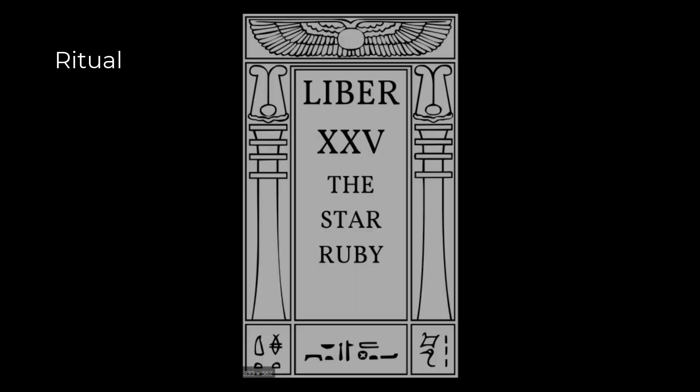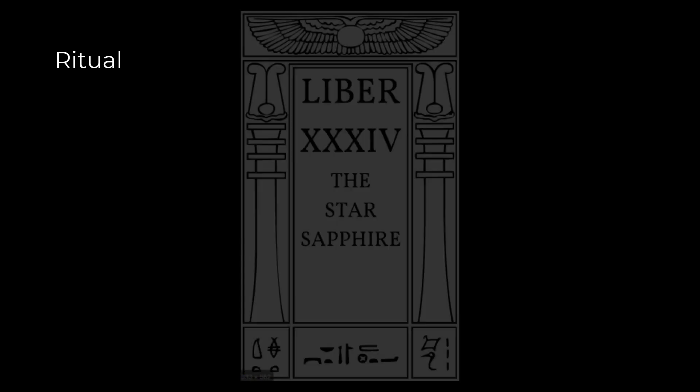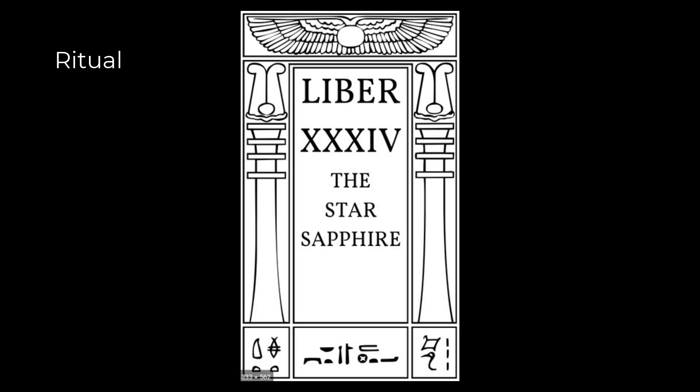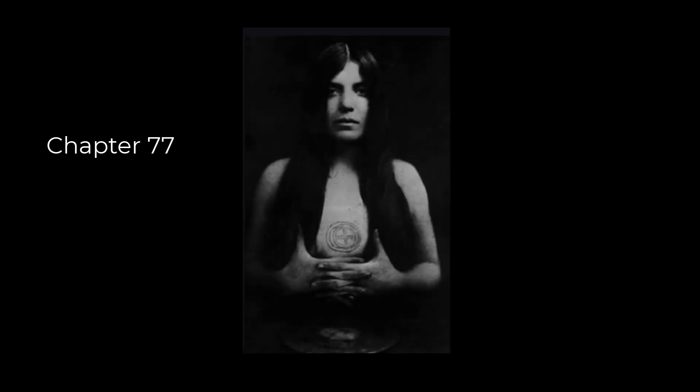Many chapters relate to Ritual: five, the Star Ruby; thirty-six, the Star Sapphire; forty-four is the Mass of the Phoenix. And some relate to the love of his life, Leila, which also means night.